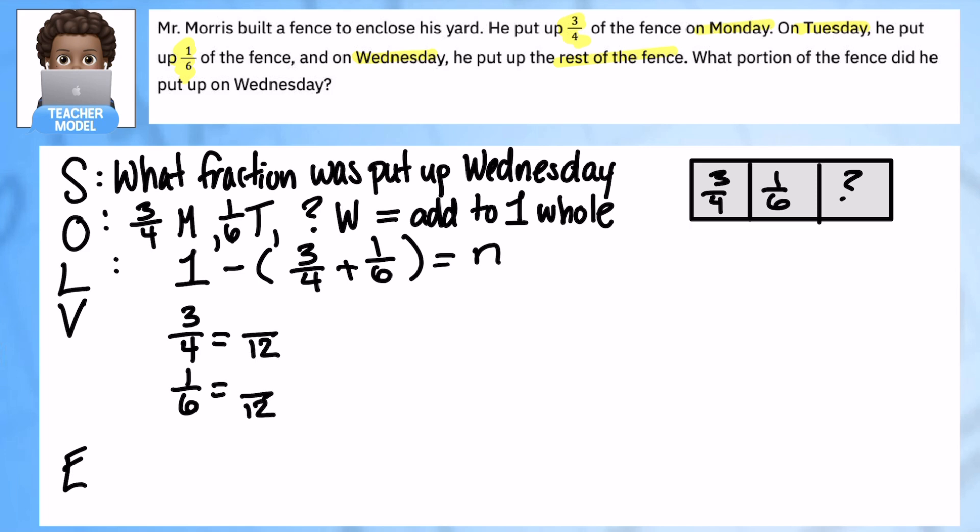I'm going to put twelve on both. Three times four makes twelve, so three times three makes nine. Six times two makes twelve, so one times two is two. Now I can add these together.